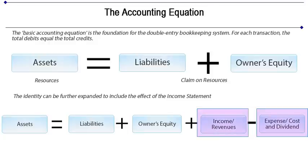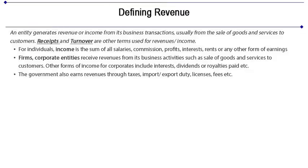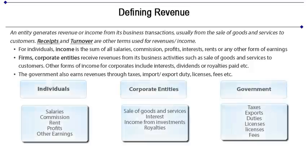Let's focus on income and defining income. The income side or the revenue side is the credit side — money comes in by conducting day-to-day business activities. An entity generates revenue or income from its business transactions, usually from the sale of goods and services to customers. Receipts and turnover are other terms used for revenues or income. For individuals, income is the sum of all salaries, commission, profits, interest, rent, or any other form of earning. Firms and corporate entities receive revenues from business activities such as sale of goods and services to customers.